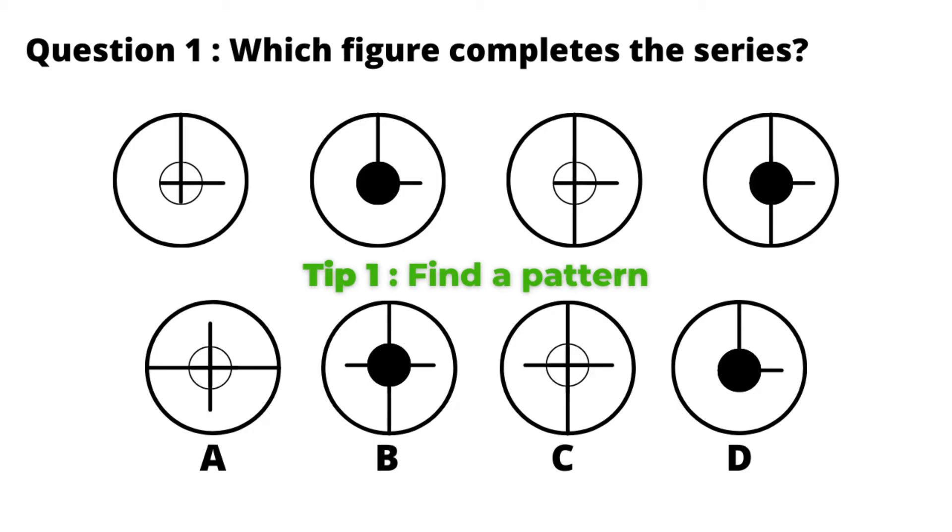So here you can see the small circle in the first figure is white, and in the next figure it's black. Again white and black. So I can guess it should be white in the next figure.